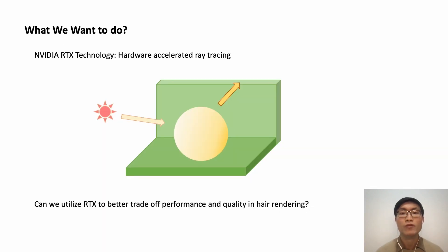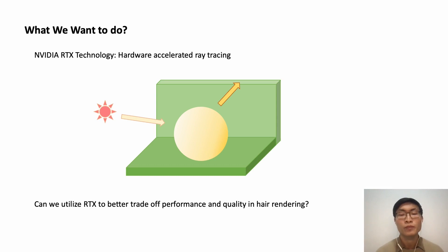Because rasterizing thin triangle strips is quite slow, we start to think about using Nvidia's RTX technology to take the place of rasterization. With hardware-accelerated ray tracing, we want to find out whether we can better trade off performance and quality in hair rendering — or more precisely, whether we can achieve better performance by avoiding heavy rasterization work while maintaining the visual quality.